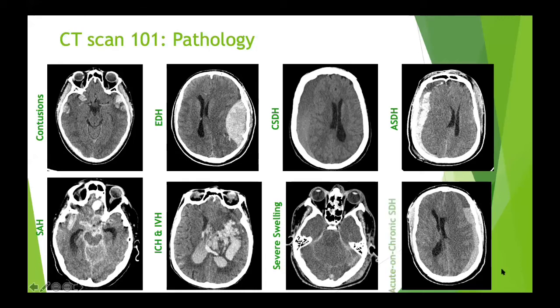The last example I always like seeing is the acute on chronic subdural hematoma with a little meniscus layer - we'll go through all of these pathophysiological processes.